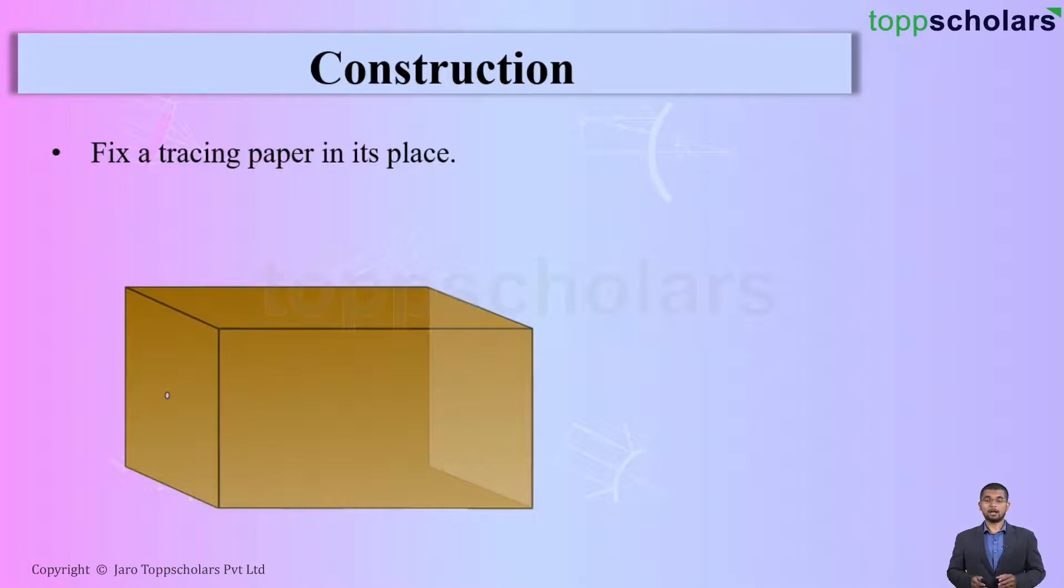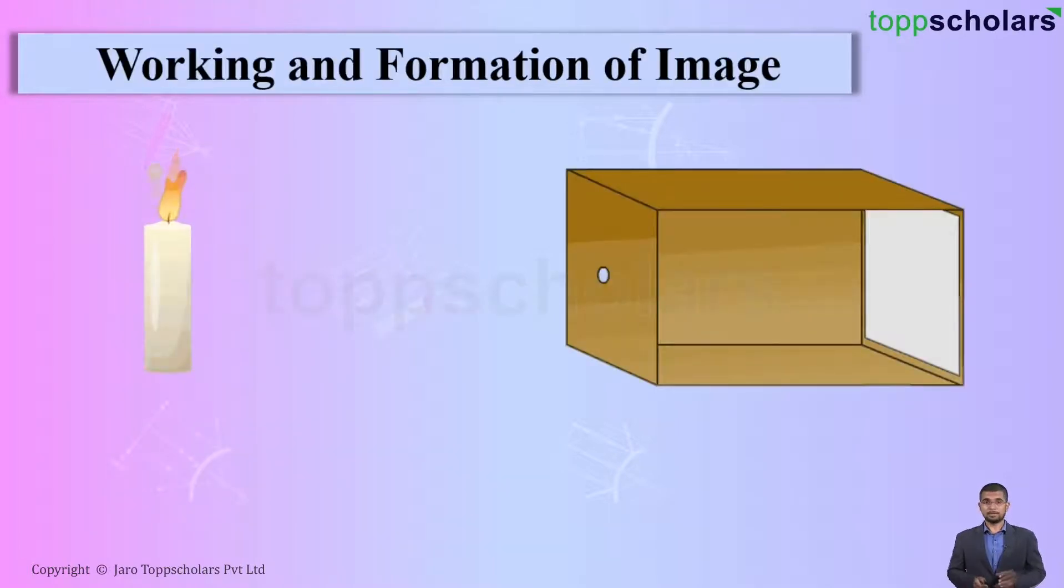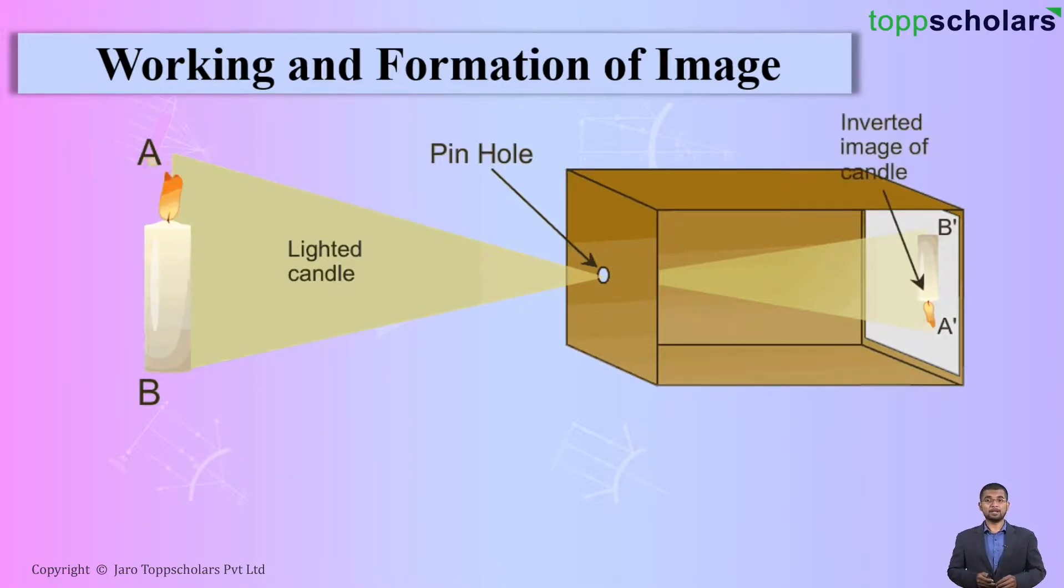Let us understand how does this pinhole camera work. Consider an object AB placed at a distance from the pinhole. The light rays from AB will enter the pinhole and an image will be formed on the tracing paper. Students, what type of image is formed? Is it inverted or erect? It is inverted image.